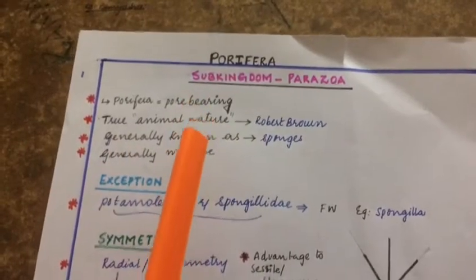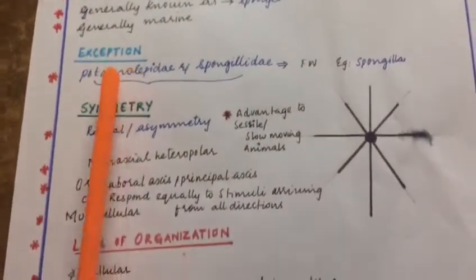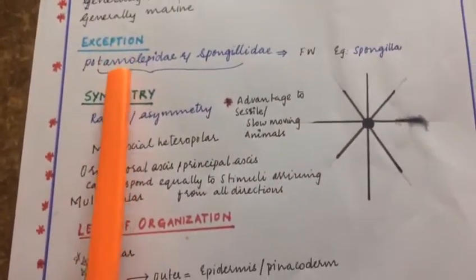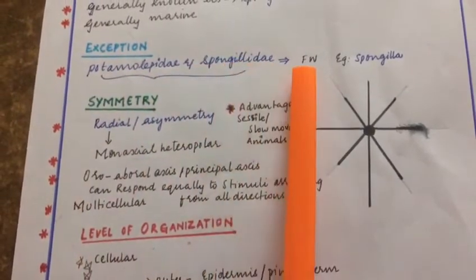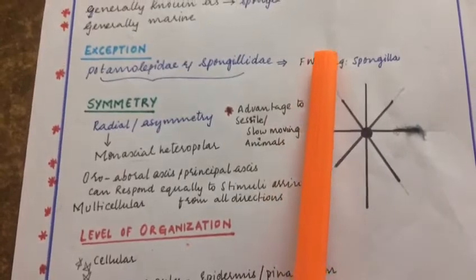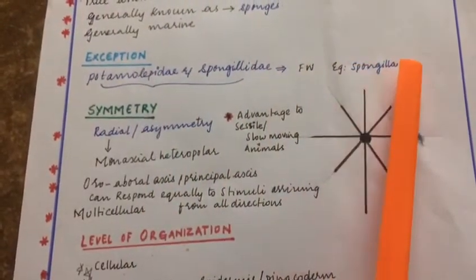Exceptions are the species which belong to the family Tamalipidae and Spongyllidae, which are freshwater species. An example is Spongylla.